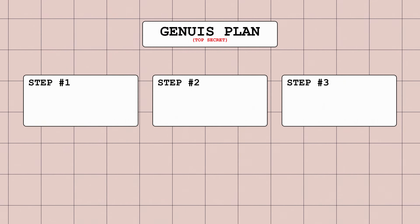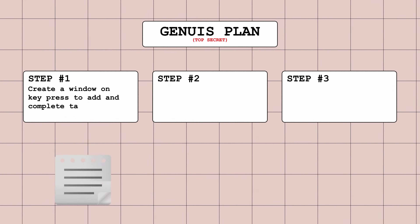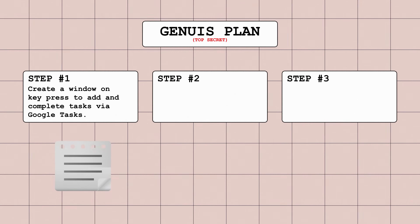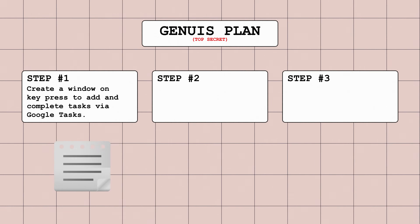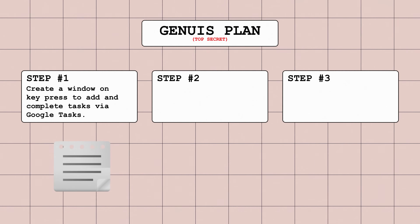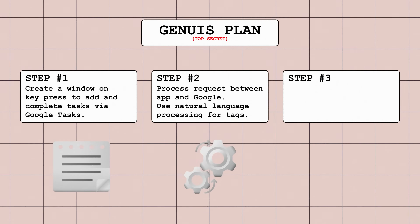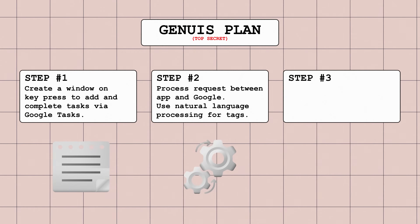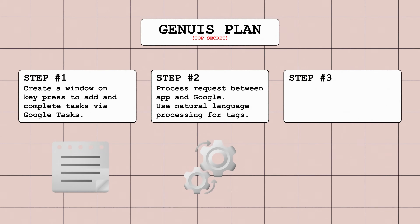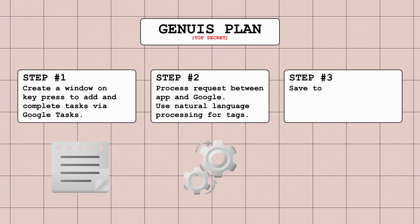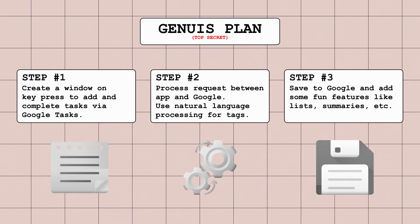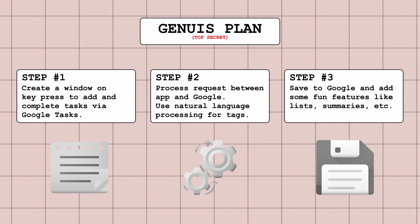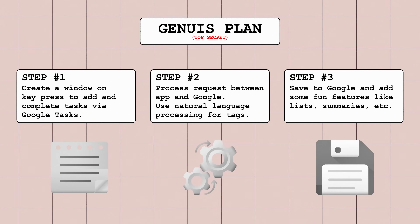So here's what we're going to build: a window that can pop up on key press, allowing you to type something in and let you know what was sent when hitting enter. We'll process the request between Google and our app using natural language processing to automatically tag and do other fun stuff, save to Google, and possibly show lists or give a summary. Okay, let's go.